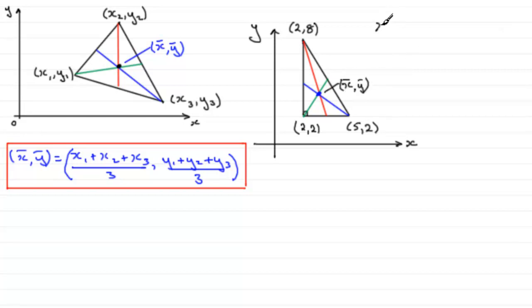So, x bar, y bar will be equal to the sum of the x coordinates divided by 3. So that's going to be 2 plus 2 plus 5. Divide that by 3. That's our x bar coordinate.